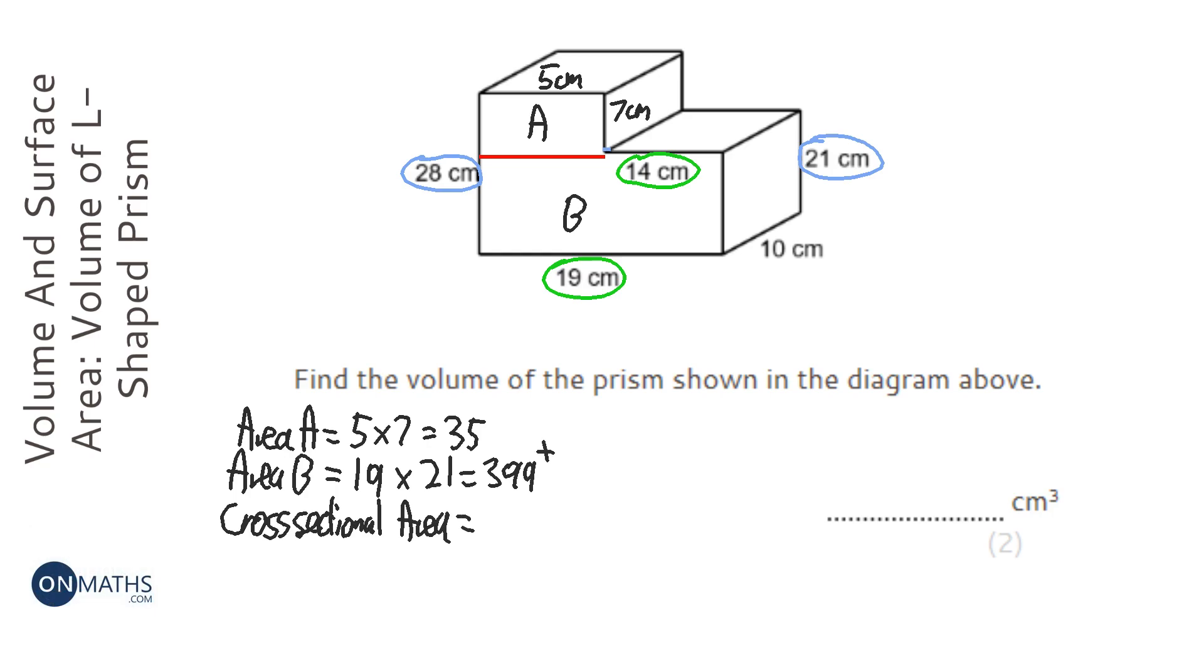is those two added together: 35 plus 399, which is 434. Okay, so the volume